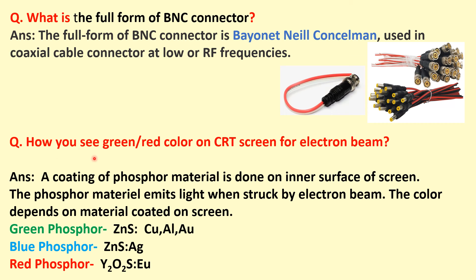And next question is how you see green or red color on CRT screen for electron beam? So a coating of phosphor material is done on inner surface of the screen. And the phosphor material emits light when it is struck by electron beam. And the color depends on the material coated on the screen. So suppose we see the green dot. So green phosphor is used for coating. And for that ZnS, zinc sulfide doped with copper, aluminum, or gold is used for green phosphor.